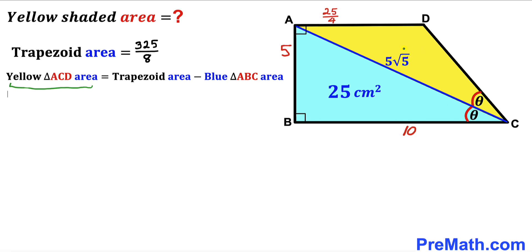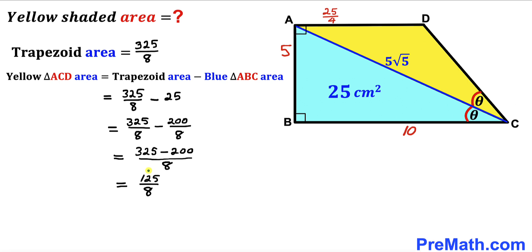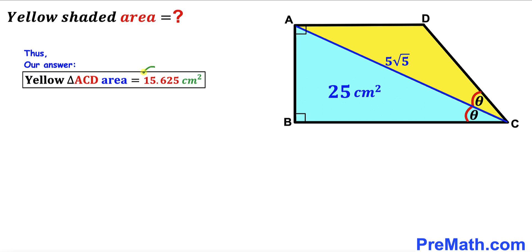Finally, the area of the yellow triangle ACD = trapezoid area − blue triangle area = 325/8 − 25 = 125/8 = 15.625 cm². The yellow triangle ACD has an area of 15.625 cm². Thanks for watching, and please subscribe to my channel for more videos.